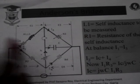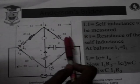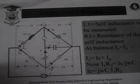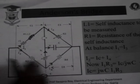This is the arm resistance R1, R2, R3, R4. This is the capacitance and this is the variable resistance.